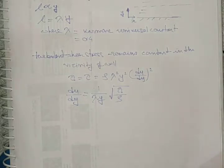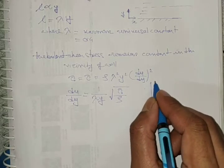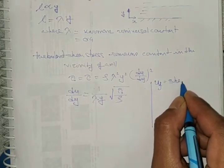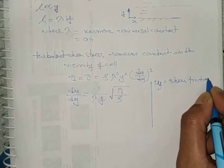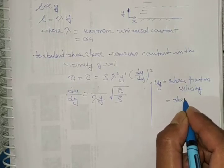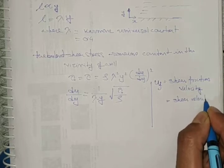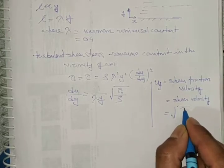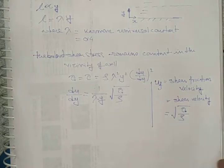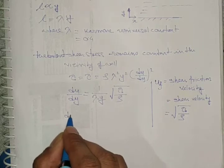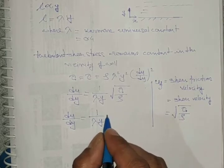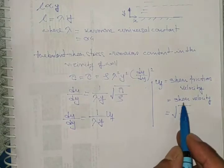From this equation, du/dy = (1/λy)·√(τ₀/ρ). Here, u_f is called the shear friction velocity or shear velocity, defined as u_f = √(τ₀/ρ), the square root of the wall shear stress divided by density. So du/dy = u_f / (λy).